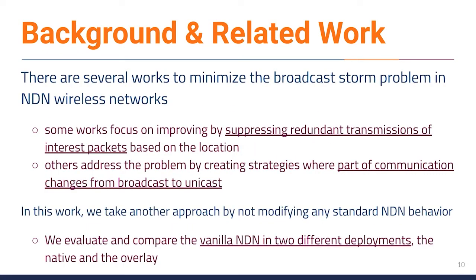Many works have been proposed to minimize the broadcast storm problem in NDN wireless networks. While some works focus on improving vehicular NDN by suppressing redundant transmissions of interest packets based on location, others address the problem by creating strategies where part of the communication changes from broadcast to unicast. In this work, we take another approach by not modifying any standard NDN behavior. We evaluate and compare vanilla NDN in two different deployments: the native and the overlay.